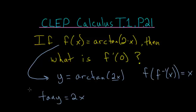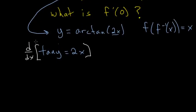And from here, we can just take the derivative of each side with respect to x. And on the left-hand side, we'll have to use the chain rule and implicit differentiation.